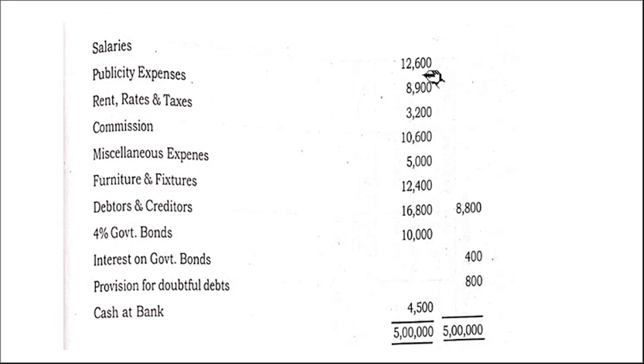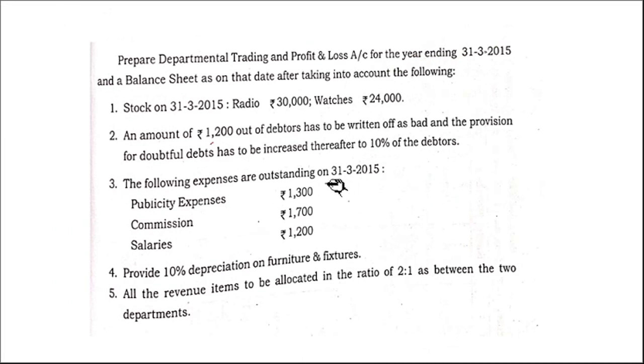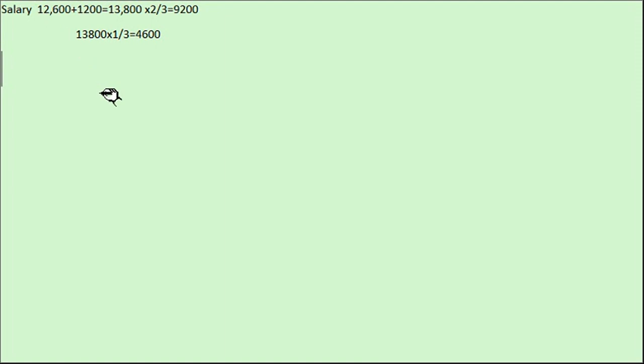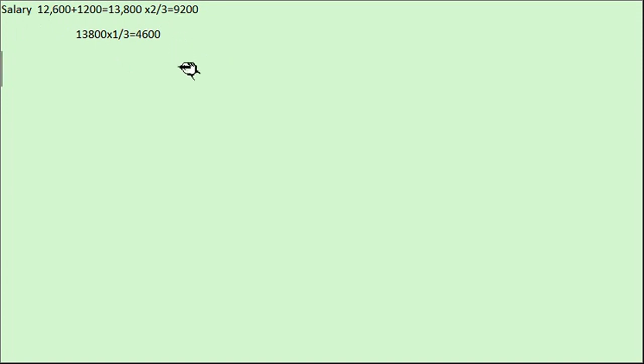For salaries, the trial balance shows 12,600. The adjustment also gives outstanding salary at 31st March 2015 of 1,200. So total salary including outstanding is 13,800. This must be distributed in the 2:1 ratio — that is, 2/3 and 1/3. So 13,800 × 2/3 = 9,200 for one department, and 13,800 × 1/3 = 4,600 for the other.